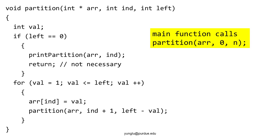Otherwise, the function uses a loop to go through 1, 2, 3, to the value to be partitioned. Inside this loop, there are only two lines. The first line assigns the value of the loop. The second line calls the function again with the array as the first argument, the index plus 1 as the second argument, and the number to be partitioned minus the loop value as the third argument. The return statement inside the stop condition is unnecessary because when the third argument is zero, this function will not enter the for loop. Even though the return statement is unnecessary, it is added there for clarity.